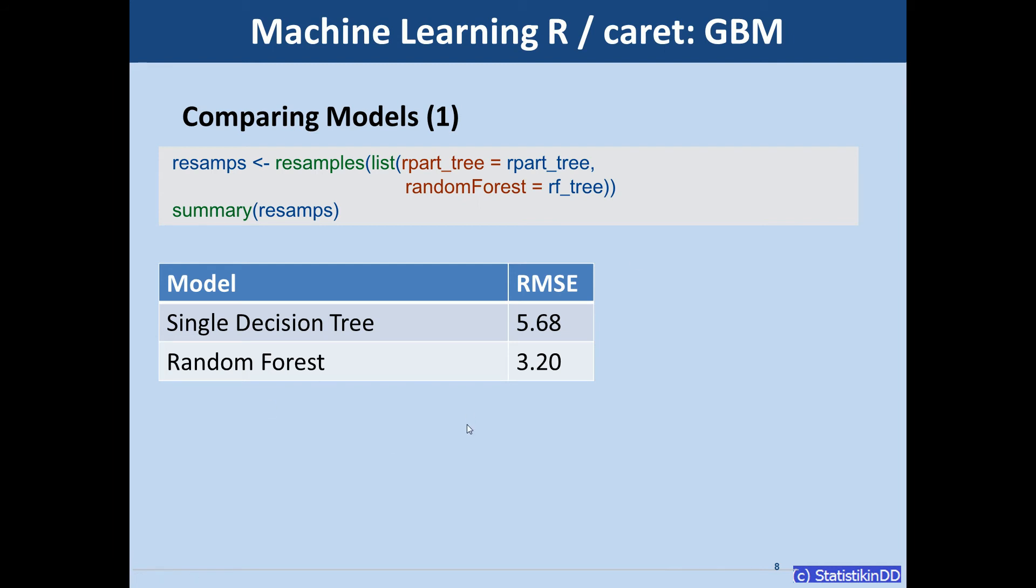So now we are challenged. Our colleague has created the random forest model and says I don't think that you can beat this model. And we accept the challenge and choose to create a gradient boosting machine.